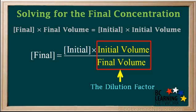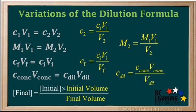The ratio of initial volume to final volume is often called the dilution factor. All forms of the dilution formula shown in this introduction are equally valid.